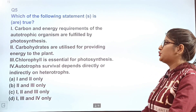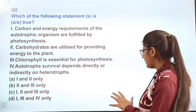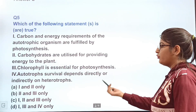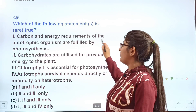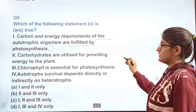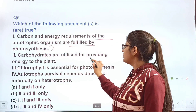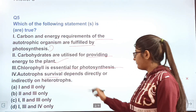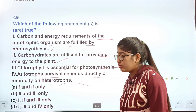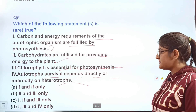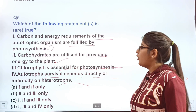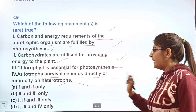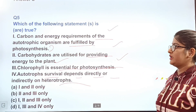Question 5: Which of the following statements is true? Four statements are given. Statement 1: Carbon and energy requirements of autotrophic organisms are fulfilled by photosynthesis. Statement 2: Chlorophyll is utilized for providing energy to the plant. Statement 3: Chlorophyll is essential for photosynthesis. Statement 4: Survival depends directly or indirectly on heterotrophs. Options: A — only 1 and 2 correct; B — only 2 and 3 correct; C — 1, 2, and 3 correct; D — 1, 3, and 4 correct.